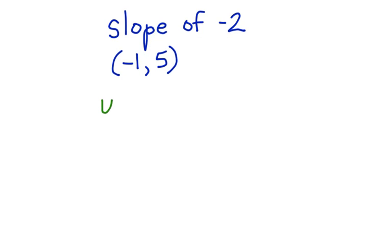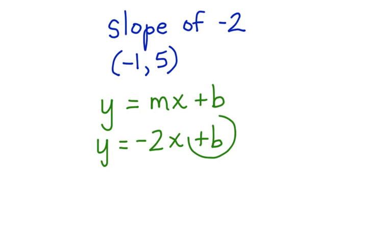Once again, let's start by using the slope-intercept form. y equals mx plus b. y equals, we substitute in negative 2 for slope, x plus b. Again, we're going to look for b. We need to solve for the y-intercept. We have an x value, and we have a y value.